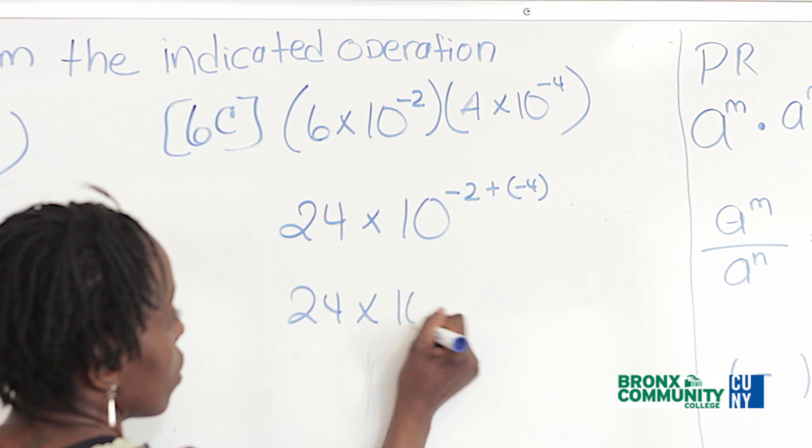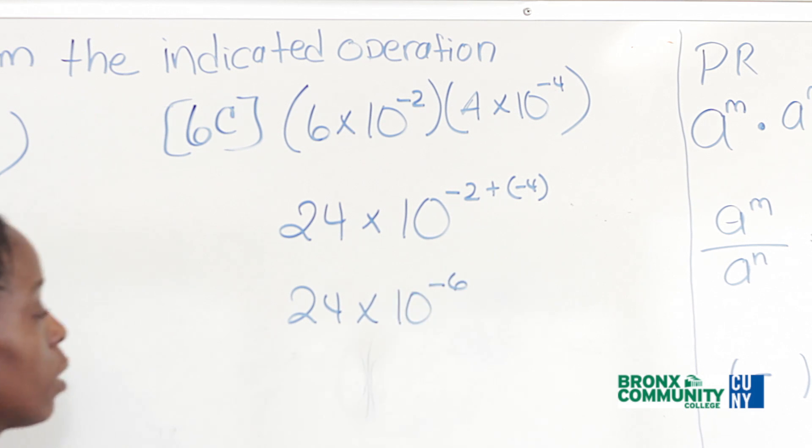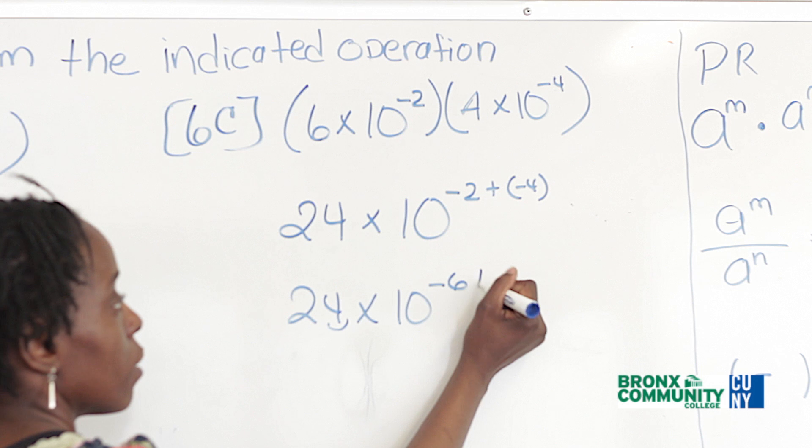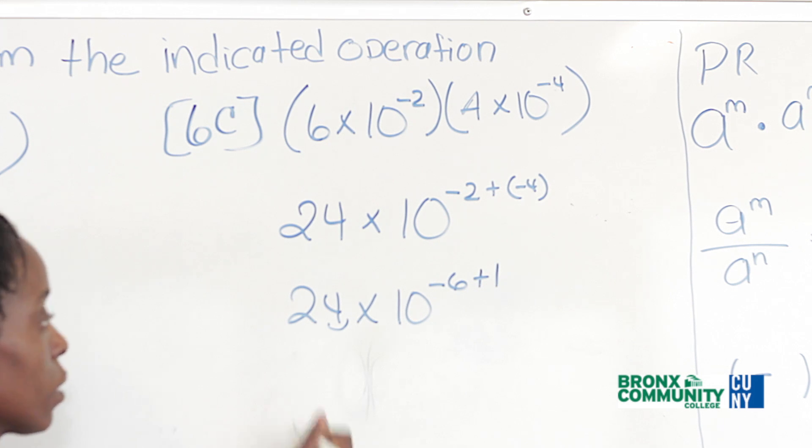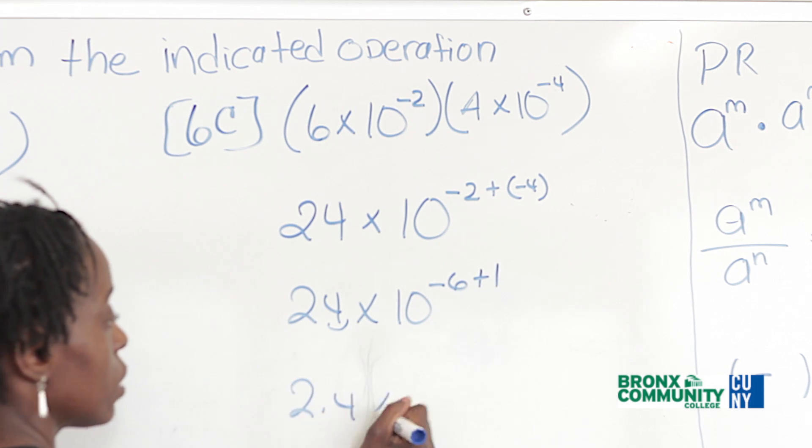So I'm just writing it. But we want a number between 1 and 10, so we move this decimal 1 place. So since we move to the left, we add 1 to this exponent. So that's 2.4 times 10 to the negative 5.